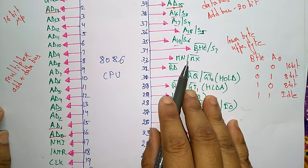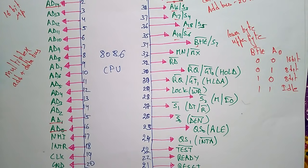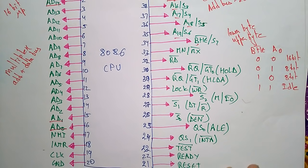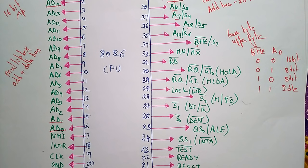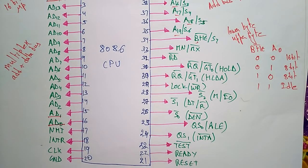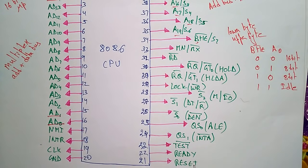The READY pin is a low-active signal used to insert wait states — whenever the device is ready, it becomes active. The RESET pin must be made active high to reset the processor; the reset signal comes from the 8284.